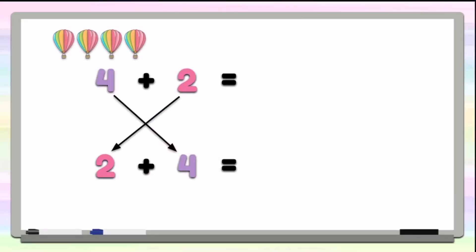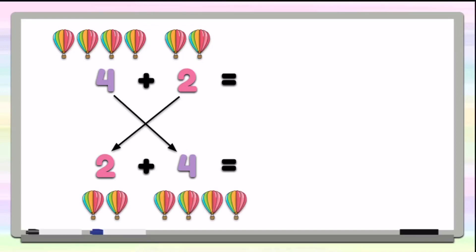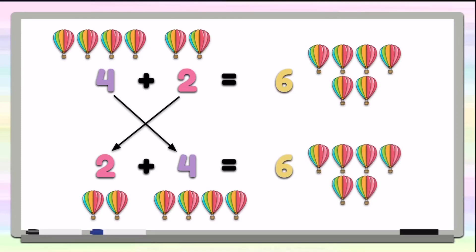So here we have 4 hot air balloons, and if we add 2 more hot air balloons, that will be the same thing as having 2 hot air balloons plus 4 hot air balloons. Both will give us a sum of 6 hot air balloons.